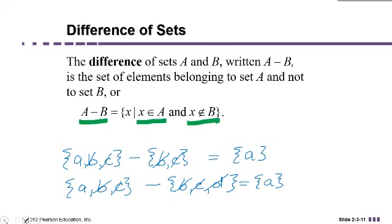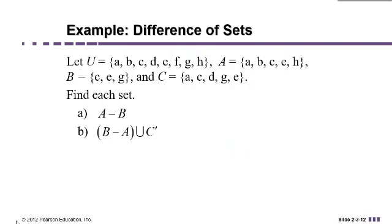So let's look at some more complicated examples. Okay, so here we're told that our universal set U is A, B, C, D, E, F, G, H.